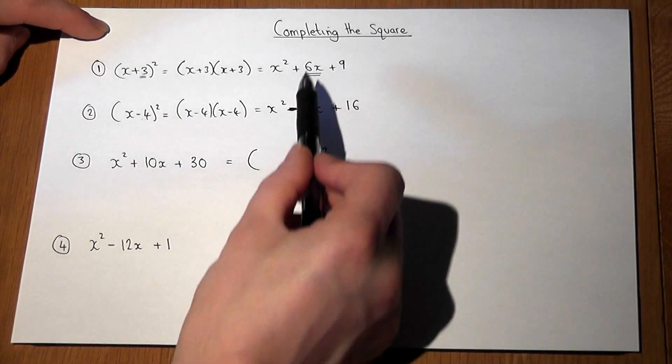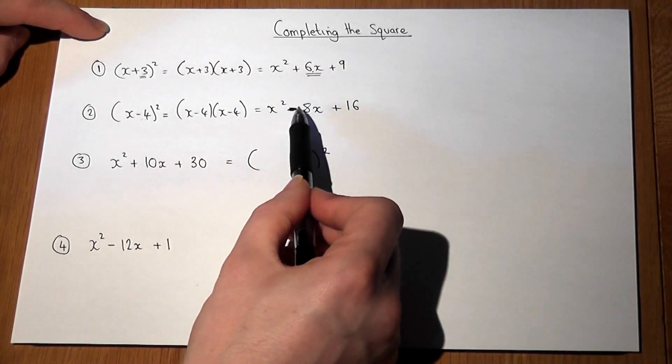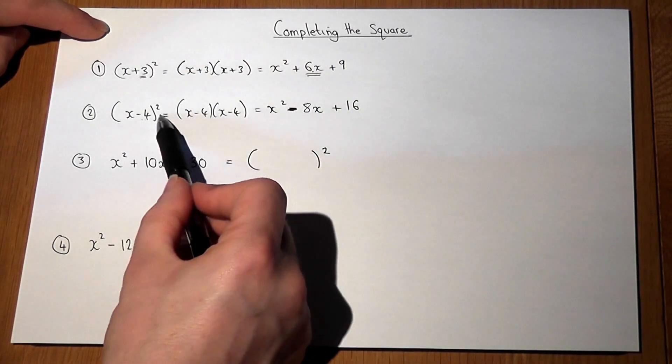So in reverse, if there's a 6 here, there must be a 3 in the bracket. If there's a -8, there must be a -4 in the bracket.